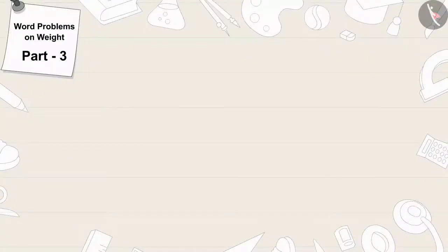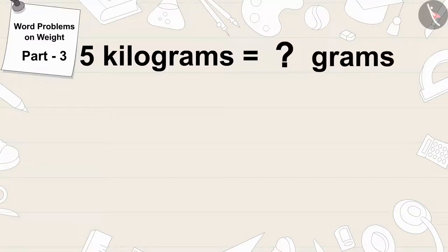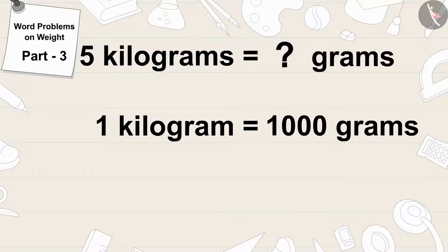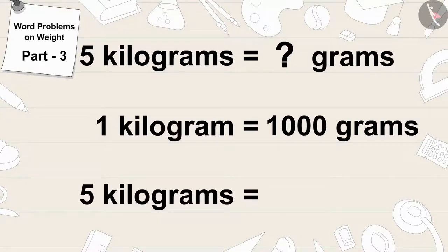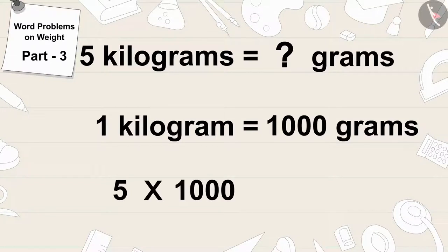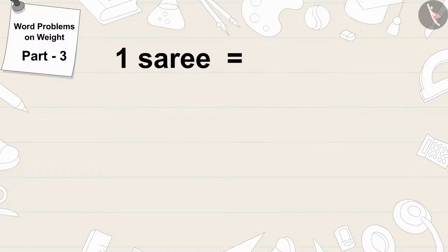First, we will write 5 kg in grams. 1 kg is equal to 1000 grams. So 5 kg — 5 times 1000 — will be equal to 5000 grams.